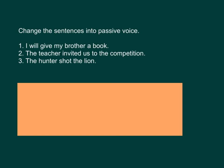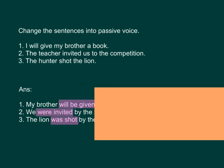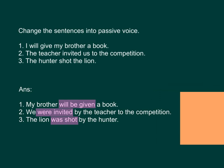The passive voice sentences are: Number one — my brother will be given a book. Number two — we were invited by the teacher to the competition. Number three — the lion was shot by the hunter.